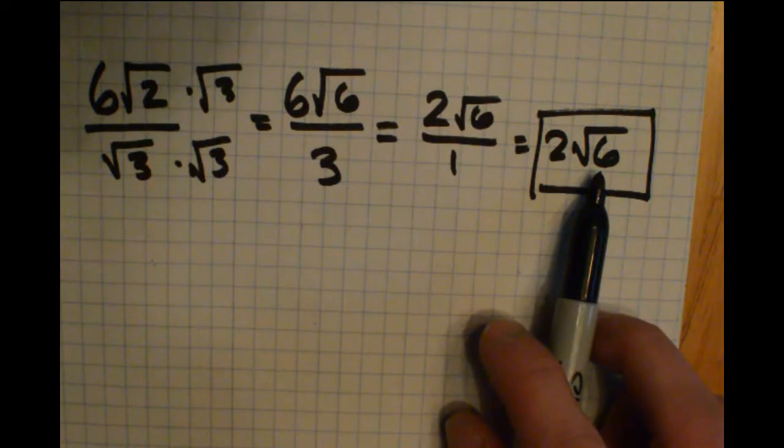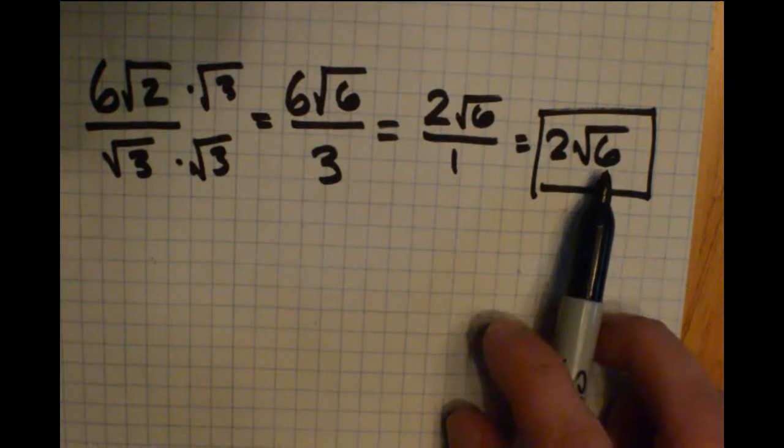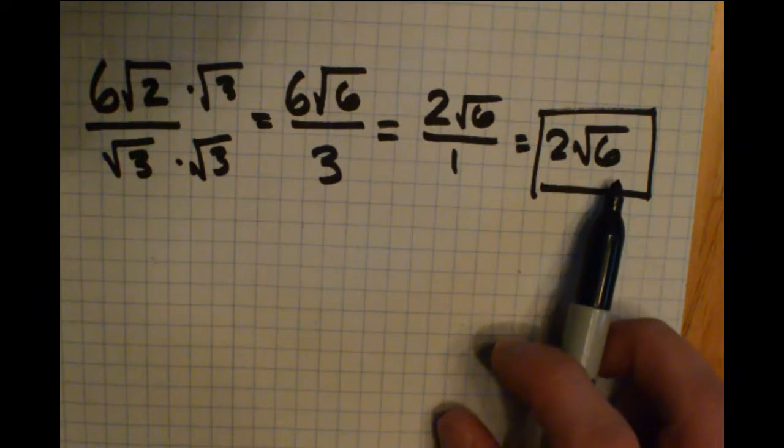Last thing you'd want to check, make sure you can't simplify this any further, but no perfect squares go into 6, so that is as simple as that one gets.